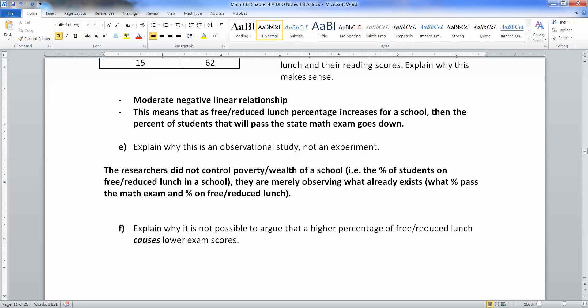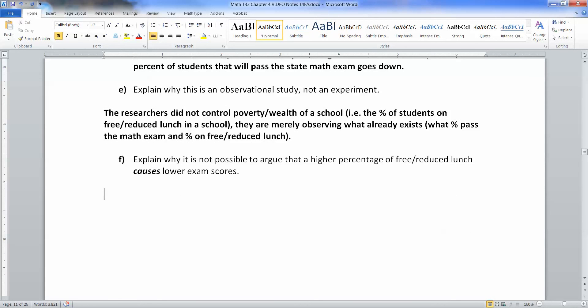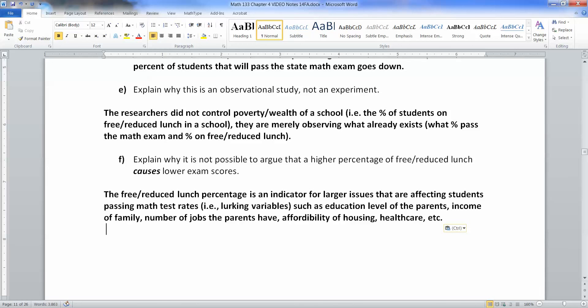They didn't say 'child A, we're going to make you have free lunch.' They just came in and say does child A have free lunch, did they pass their math test? They're just observing what already occurs. But because they're just observing what already occurs, they can't say that free reduced lunch causes lower math scores. They can't say this child gets free lunch therefore they will automatically fail. It means that the children on free reduced lunch are having something going on that is affecting them that also is affecting their math tests. There are other variables called lurking variables that might be affecting what's going on.